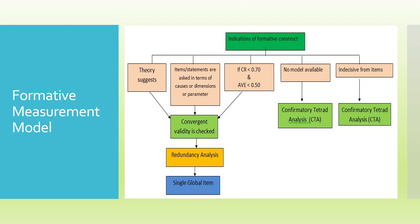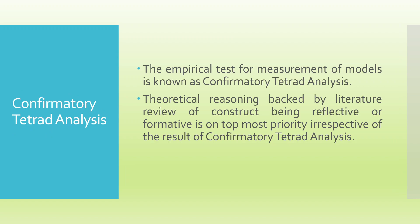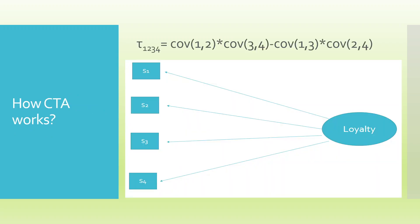In that scenario we go for Confirmatory Tetrad Analysis. Remember, according to the authors, CTA is not the silver bullet. Even after running CTA, if a researcher feels the construct is reflective or formative, the decision is ultimately the researcher's. So I am repeating: CTA is not the silver bullet. Now let us understand the mathematical formulation of running the Confirmatory Tetrad Analysis.